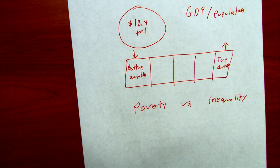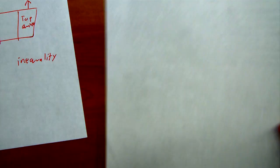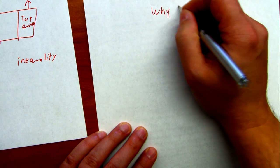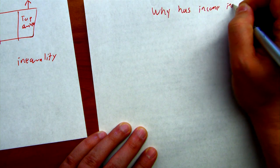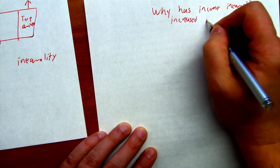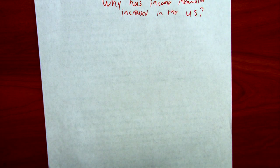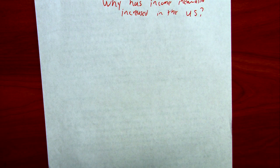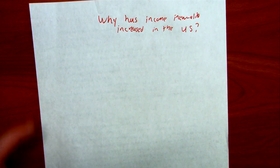Why is it that people at the top of the income distribution are getting more income and people at the bottom are getting less? Here's how economists frame the question: why has income inequality increased in the U.S.? It's a fact that income inequality has increased — whether or not it's a problem is debatable, but it has increased. That's a positive statement. Economists have proposed a number of factors that might be contributing.